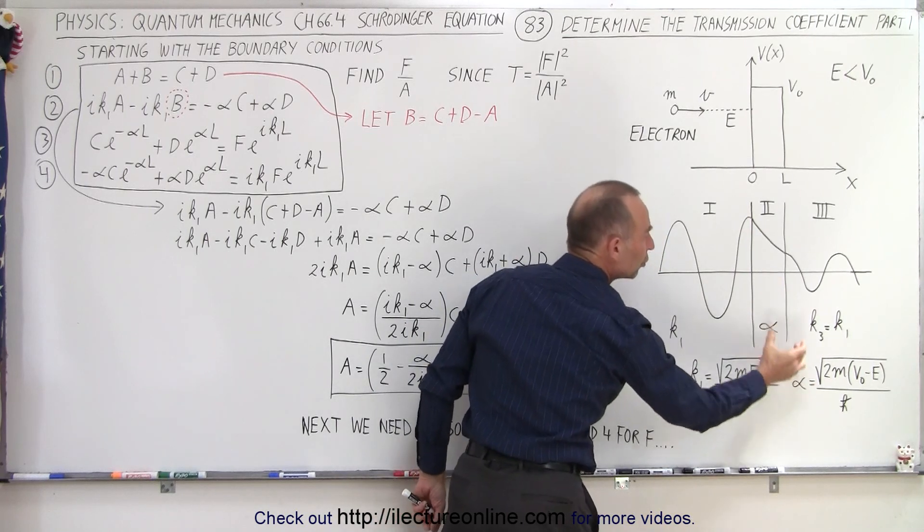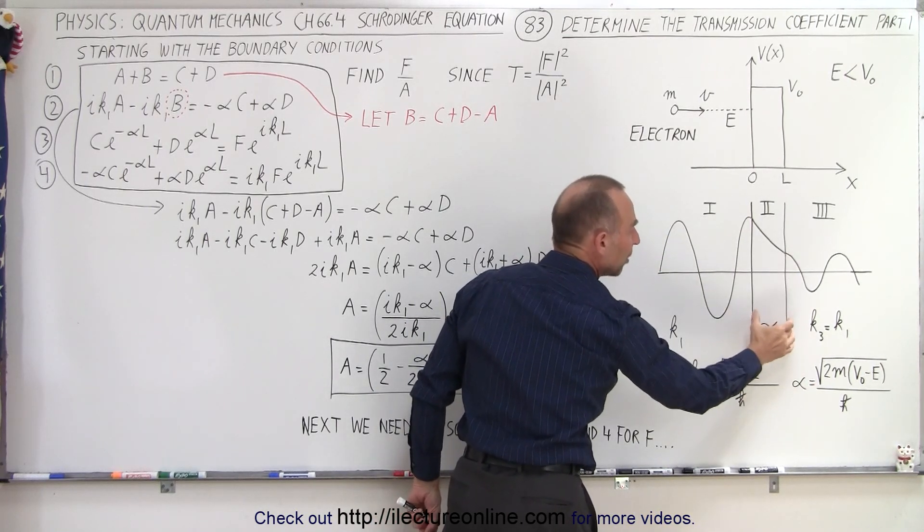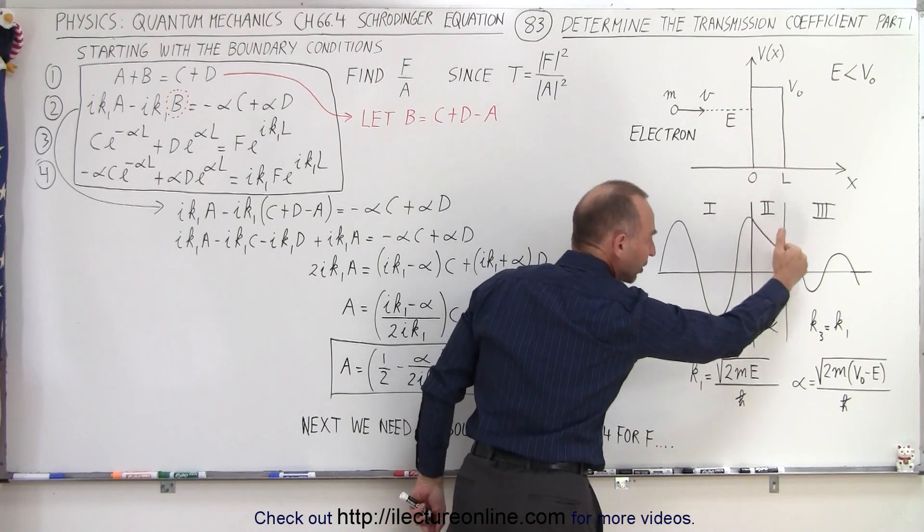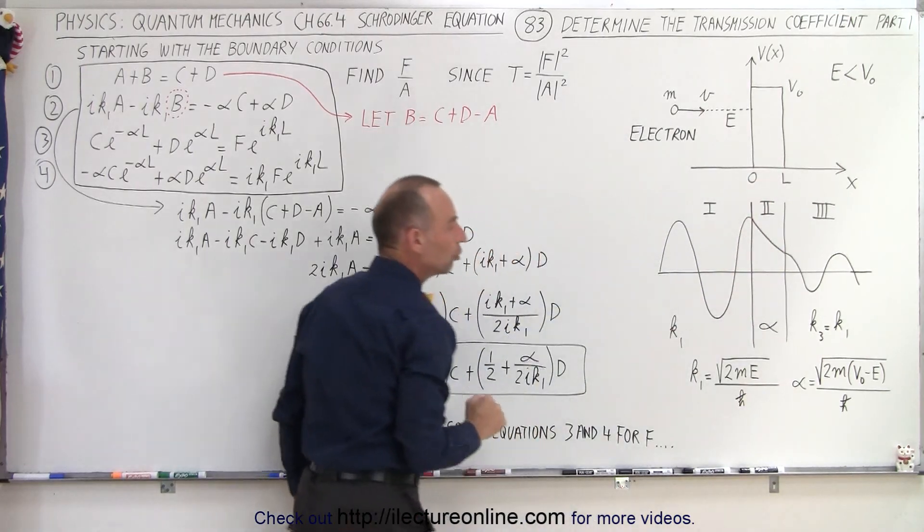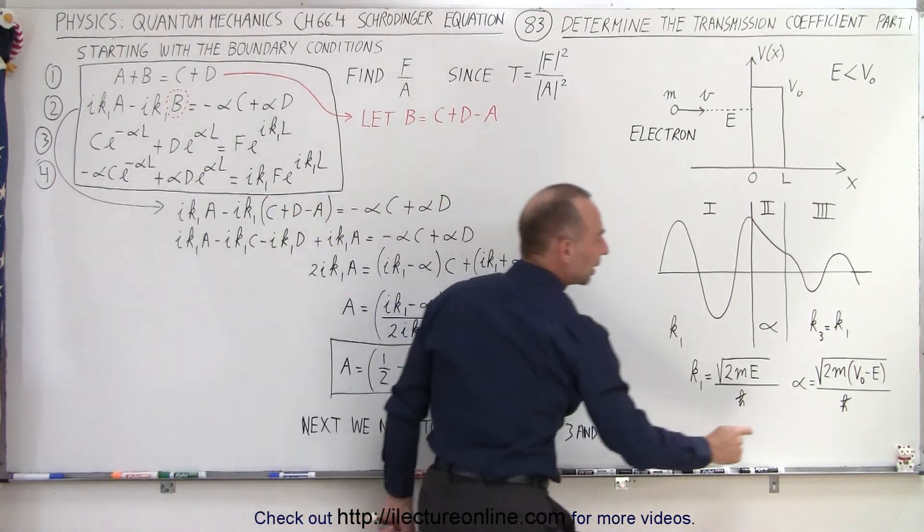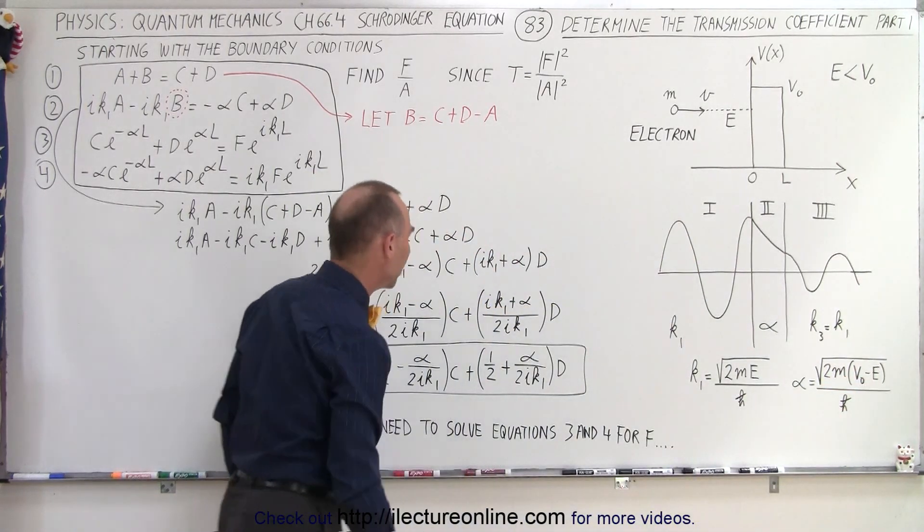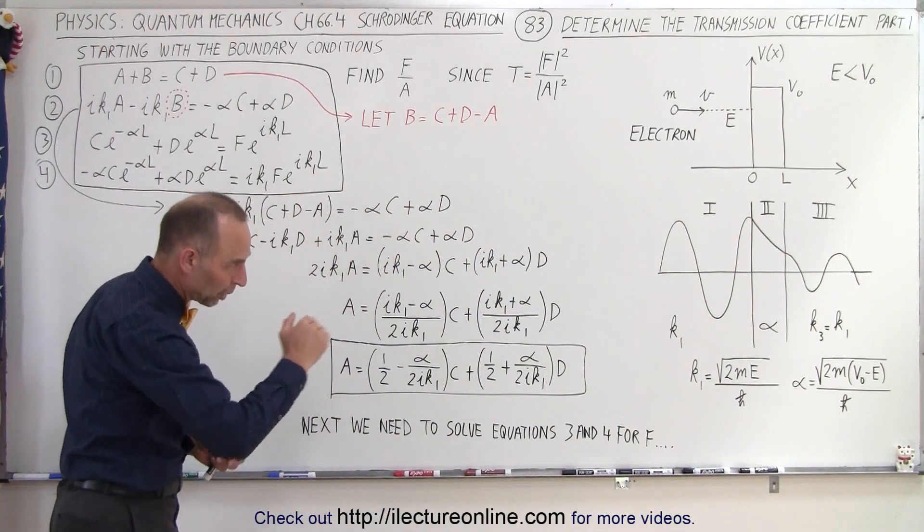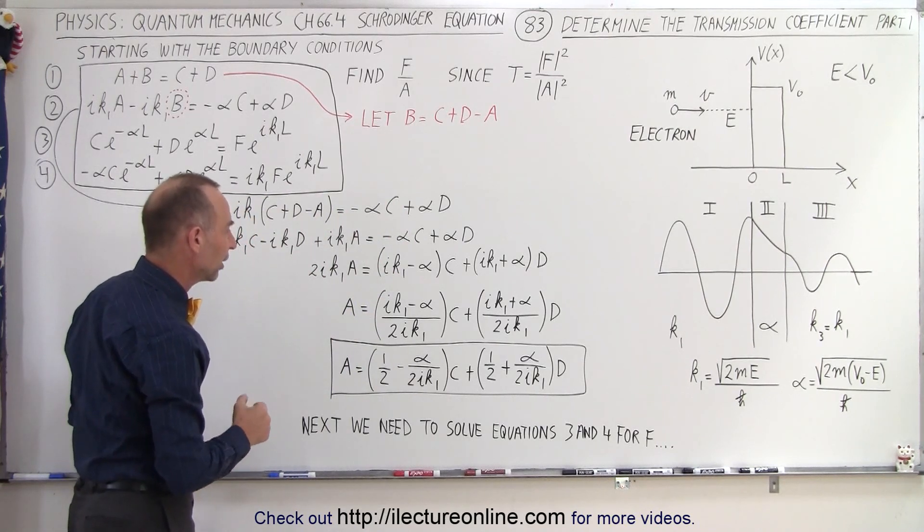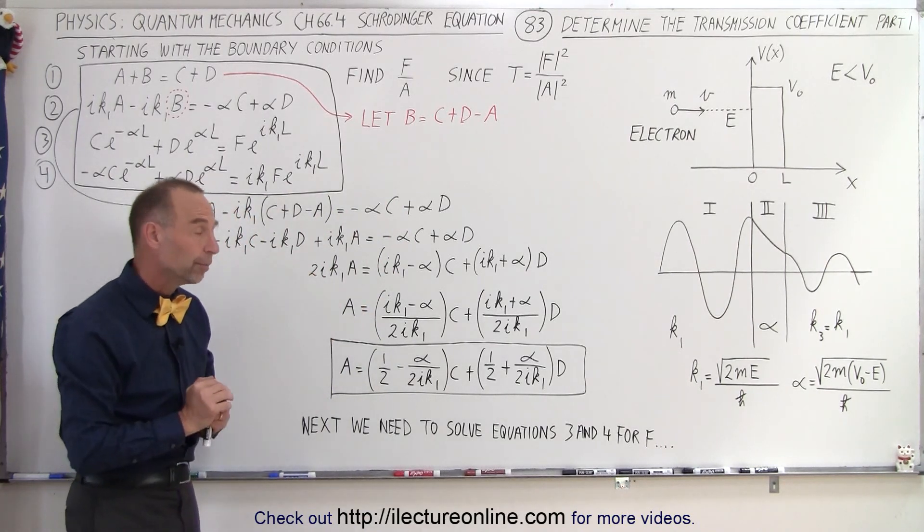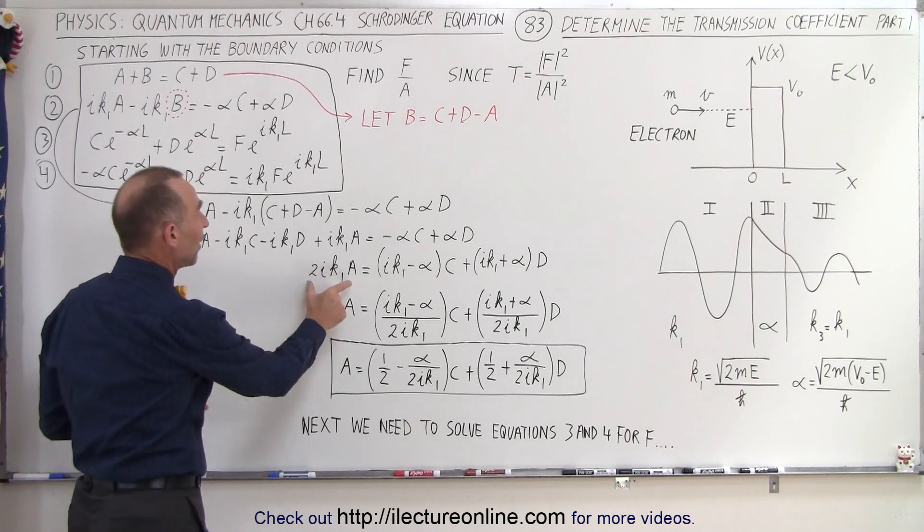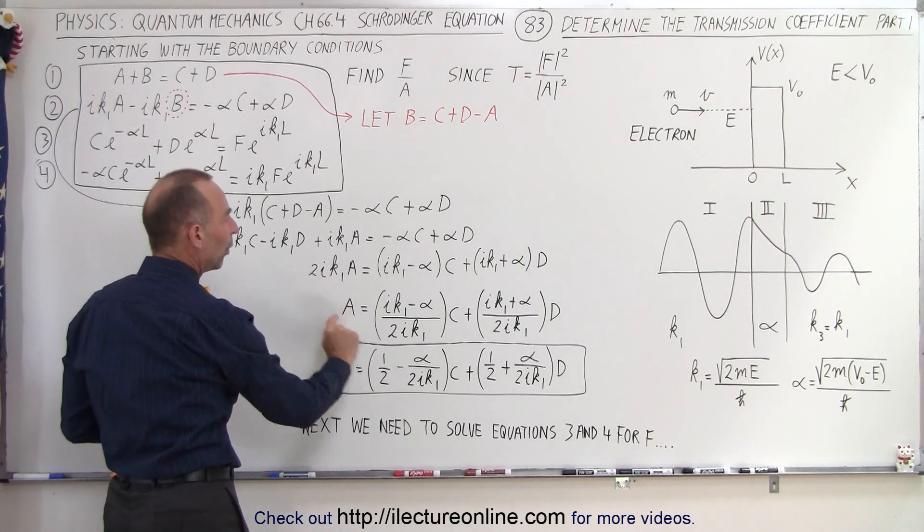And alpha is equal to the equivalent wave number, but in this case it's the exponential decay constant in region 2, because here we realize that the potential of the barrier is greater than the energy of the particle. So we have what we call an exponential decay function there, an exponential decay constant. So the next thing we do is to divide both sides by 2i k1.